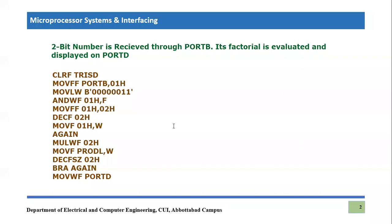I have written the code for it, so let's discuss this code line by line. The first line is CLRF TRIS D, which means we are declaring Port D as an output port because we are sending zeros to each and every bit of TRIS D.